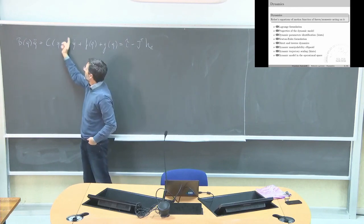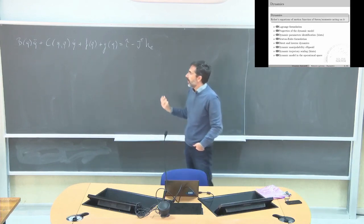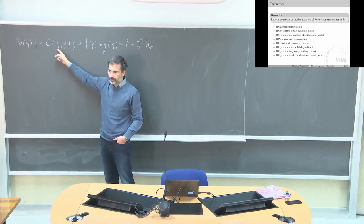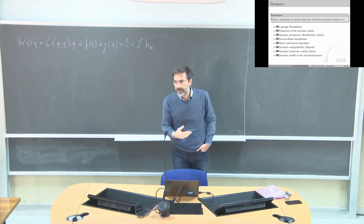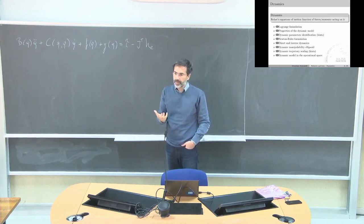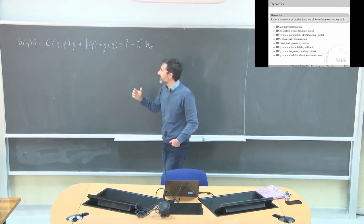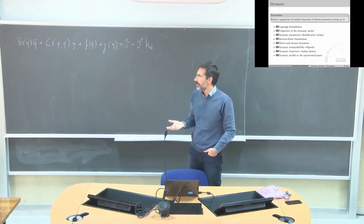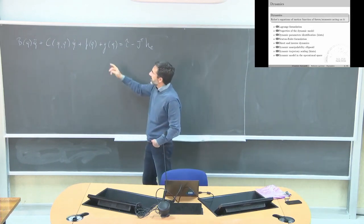Here we have the Coriolis and centrifugal terms, which are functions of the square of the velocity and configuration. I've collected all the friction terms in one generic function. Friction is not an easy dynamic effect to model, especially at low velocity. At large velocity for industrial robots it is mostly linear — viscous friction with a static component — but at low velocity it's a little bit tricky. Then we have the gravity term.